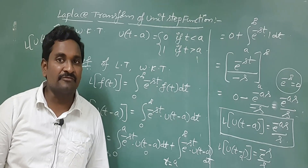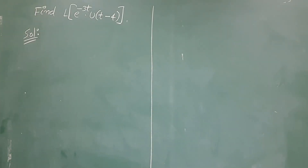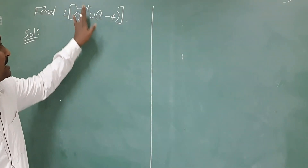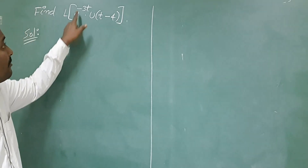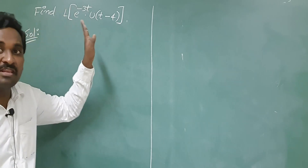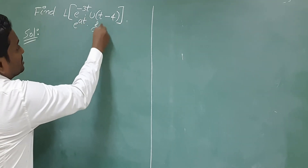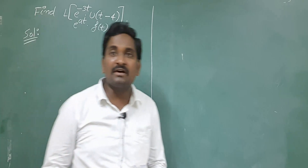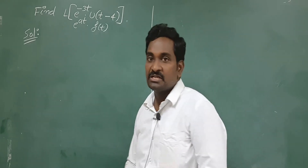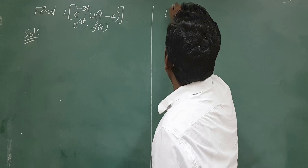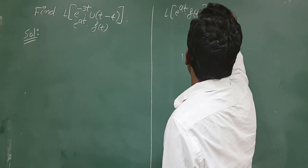Now I will give some more examples on the unit step function. Example: Find L{e^(-3t) · u(t - 4)}. This is a very important problem. The given function is in the form of e^(at) · f(t), so we should remember the first shifting theorem on Laplace transform: L{e^(at) · f(t)} = F(s - a), where in F(s) we replace every s with s - a.